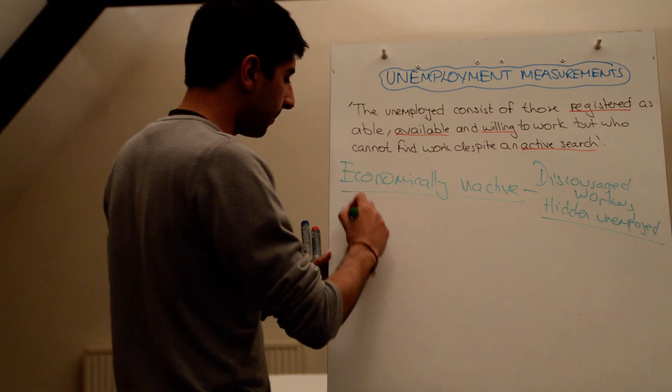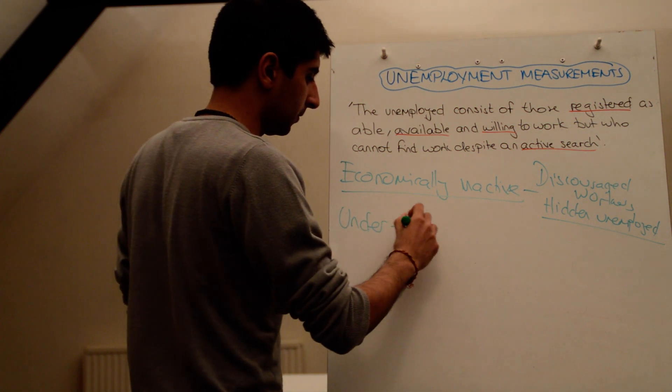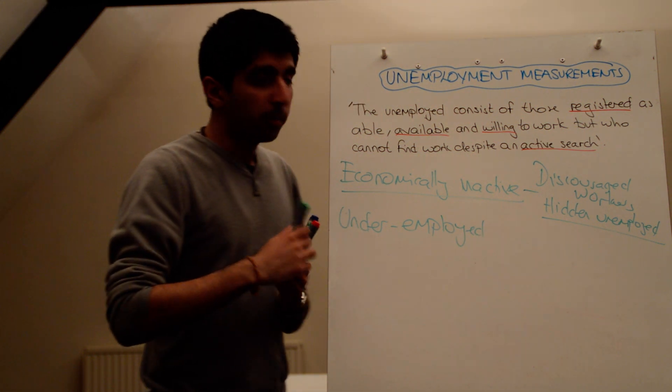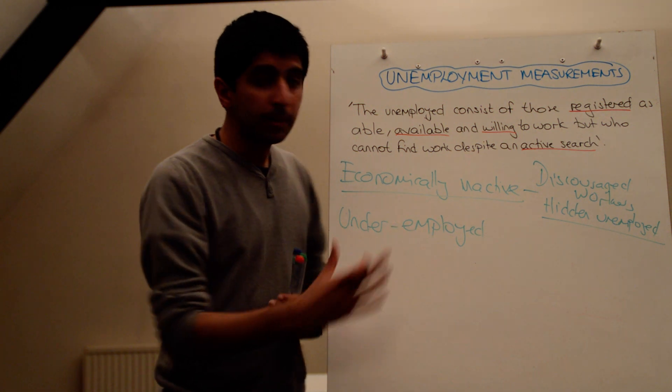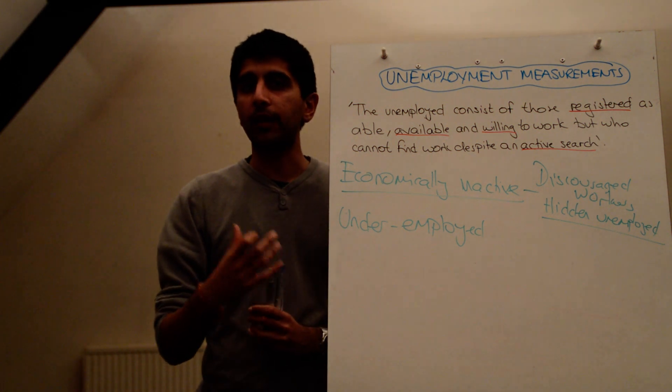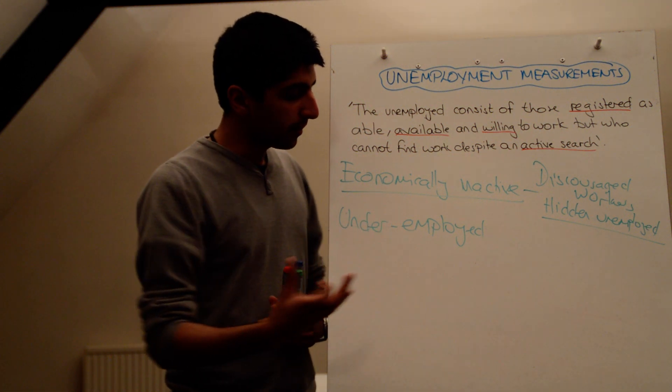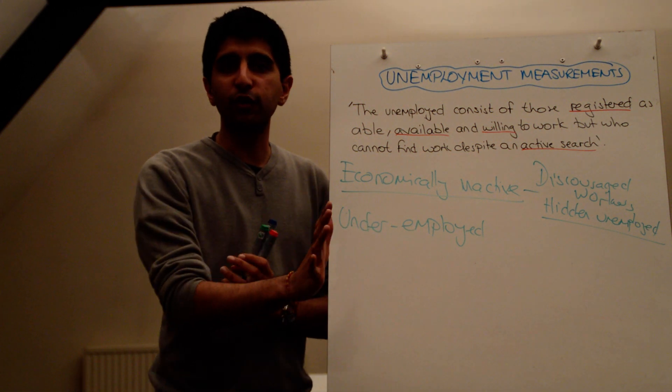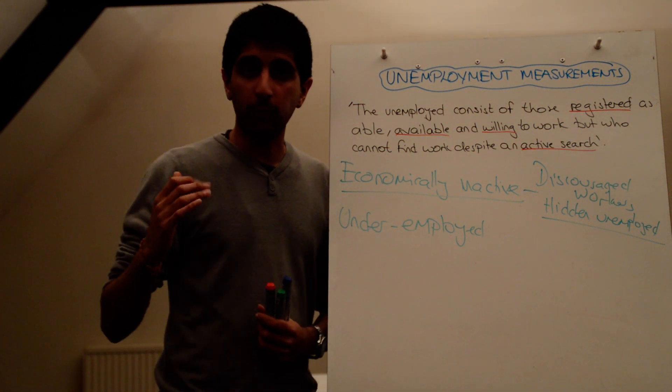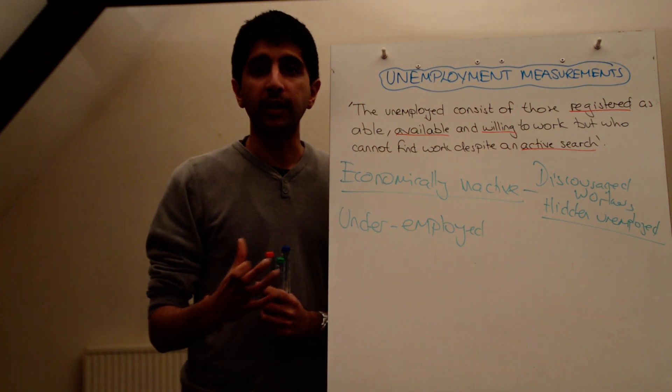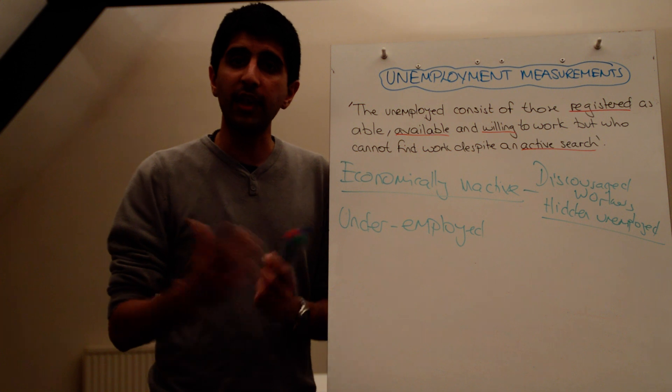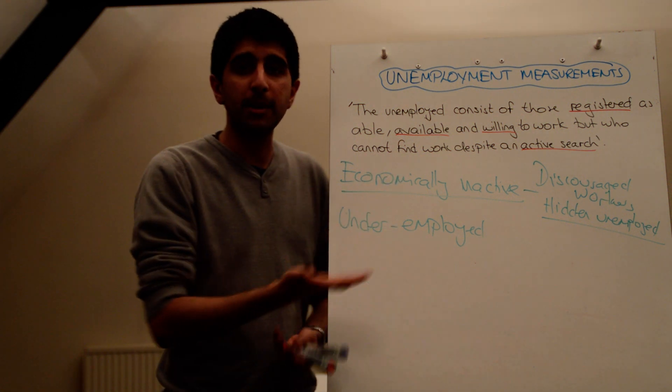At the same time, what about the underemployed? This was a big problem in the 2008-2010 recession. A lot of people actually were in work, maybe in part-time work, but they would consider themselves to be underemployed. And the reason that they're underemployed, very simply, they're looking for a job. They're happy to take any job, even if it's part-time. But, they would have preferred to be in full-time work. They are underemployed, yet that's not actually accounted for in the LFS measure or the claimant count measure. Therefore, we could argue, are we actually measuring unemployment correctly?